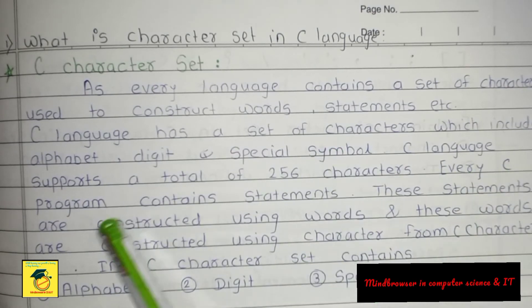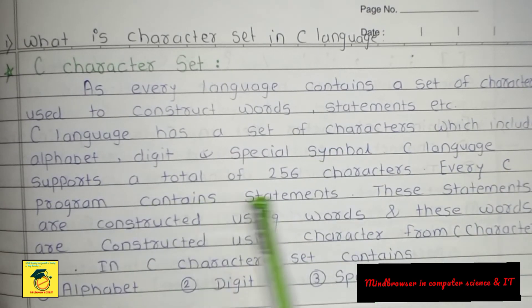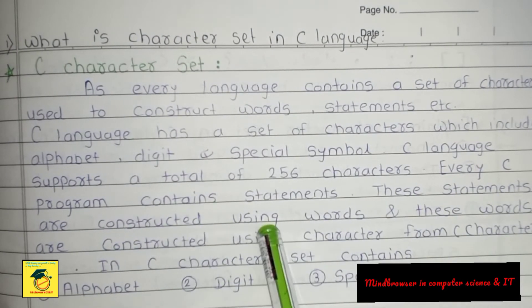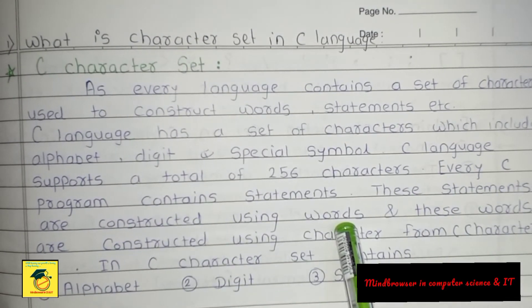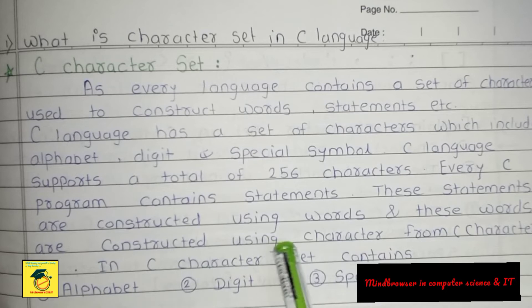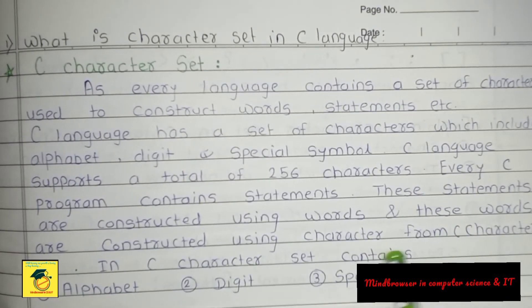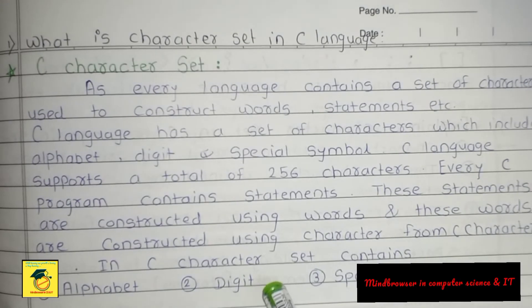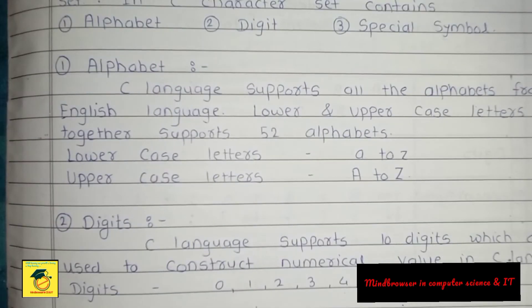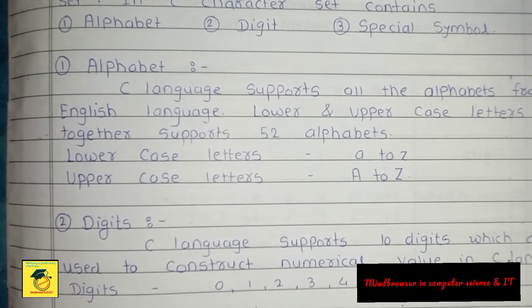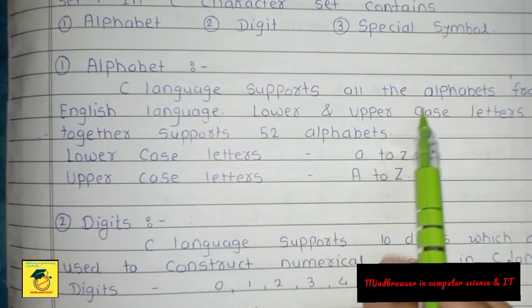Every C program contains statements. These statements are constructed using words, and these words are constructed using characters from the C character set. The C character set contains alphabets, digits, and special symbols.